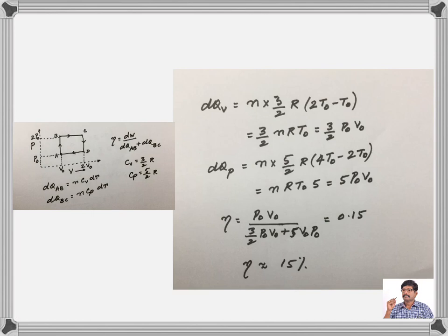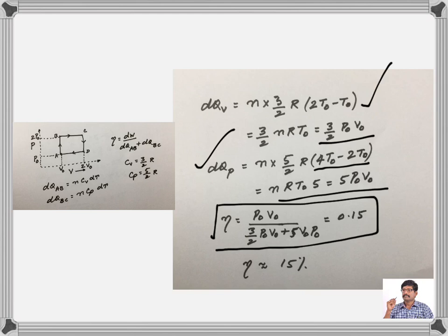During constant volume, dQv is 3/2 P0V0. During constant pressure, the temperature change is 4T0 minus 2T0. So, you will get dQp as 5P0V0. Now, let us apply the efficiency definition. You will get the efficiency is around 15%, about 15%.